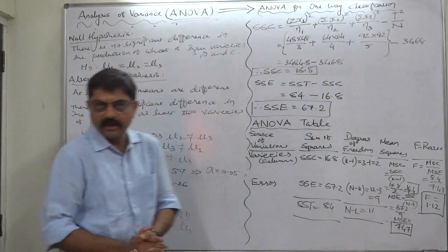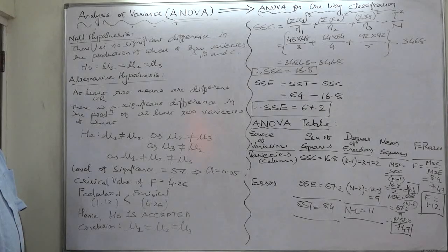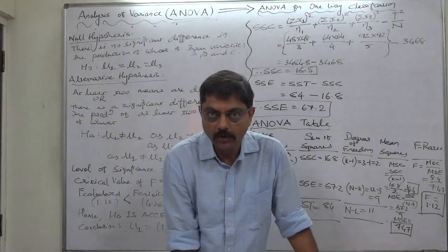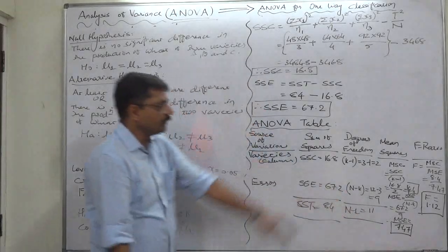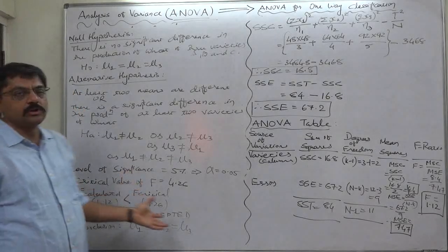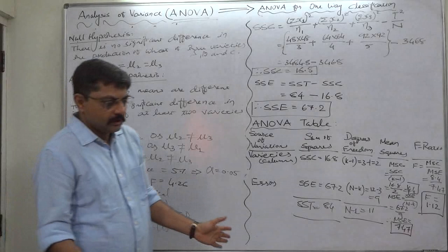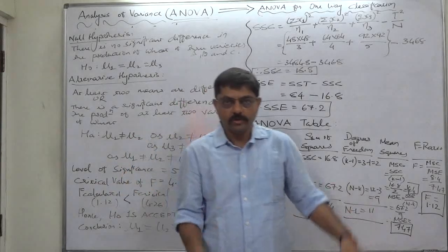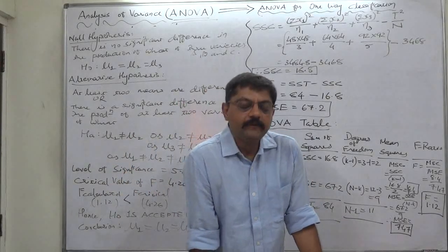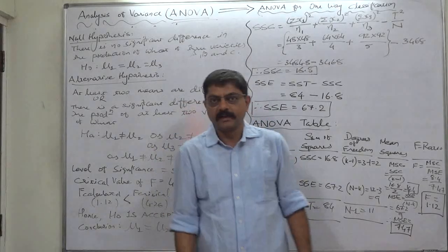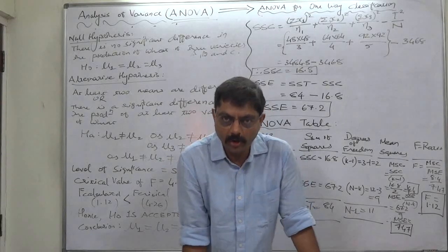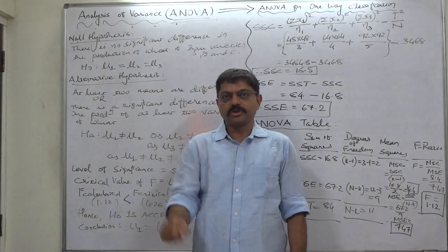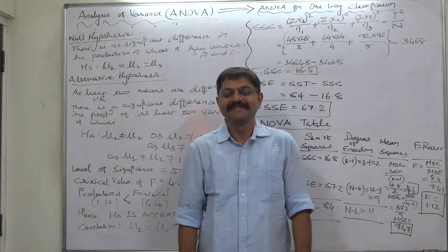This problem is quite lengthy, but we used the shortcut method — the easiest possible way of finding the F ratio. I hope this lecture is useful to you in understanding the statistical procedure of one-way classification of ANOVA. If you like this lecture, please click the like button, and if you have not subscribed to my channel, please subscribe. Thank you very much.